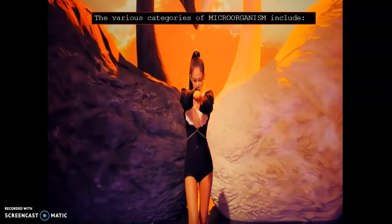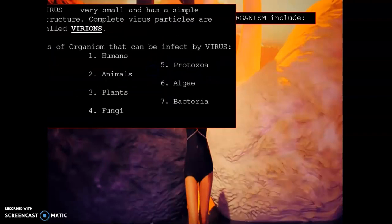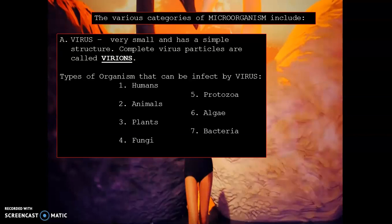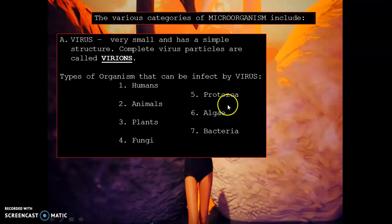Next, let's continue our discussion on the categories or different types of microorganism. First: virus. As we all know, virus is very small and has a simple structure. A completed virus is called a virion. There are many types of organisms that can be infected by a virus — the virus depends on the host to reproduce and can literally take over the host's functions. Organisms that can be infected include humans, animals, plants, fungi, protozoa, algae, and bacteria.